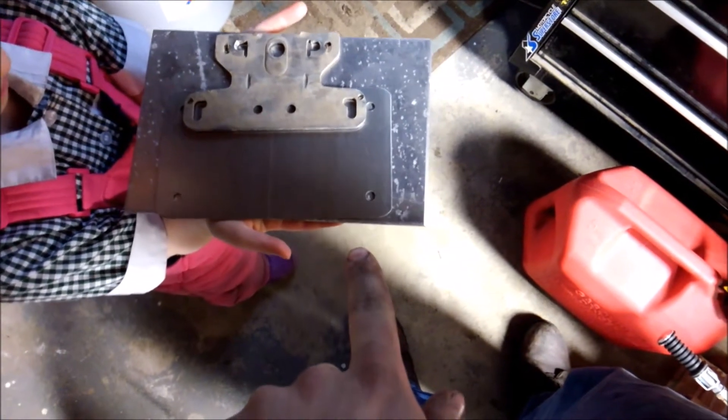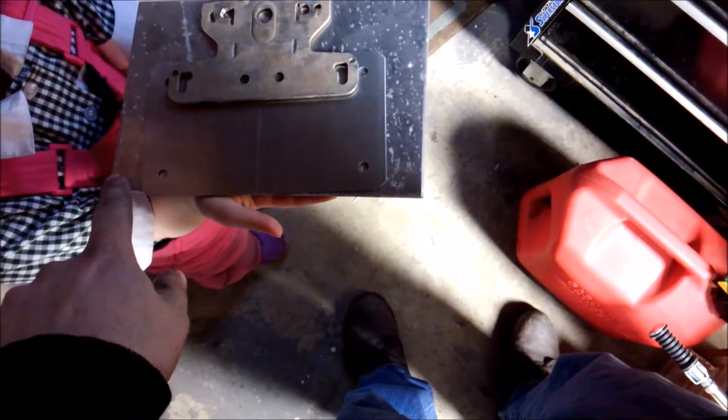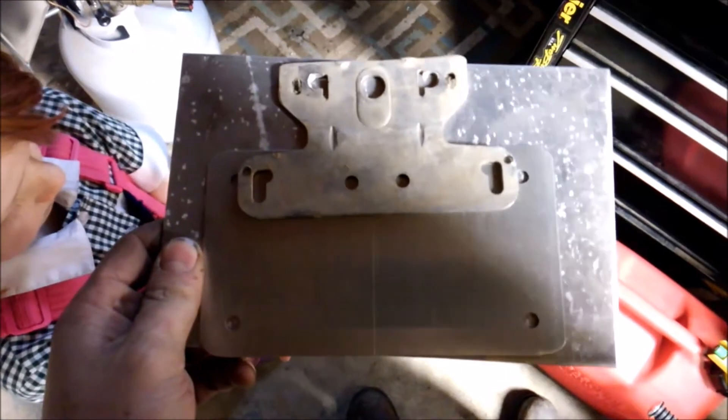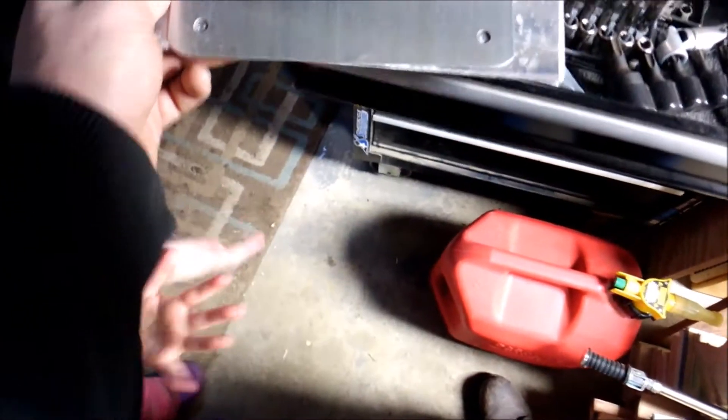So we've got a plate backer so it doesn't destroy our license plates. It's kind of our mud flap right now, and then it'll also be the mounting bracket for the bike. Not that cold.